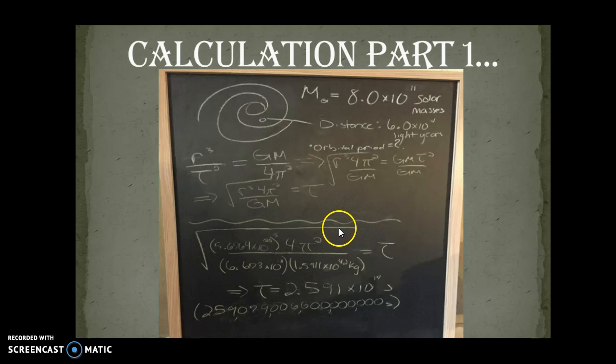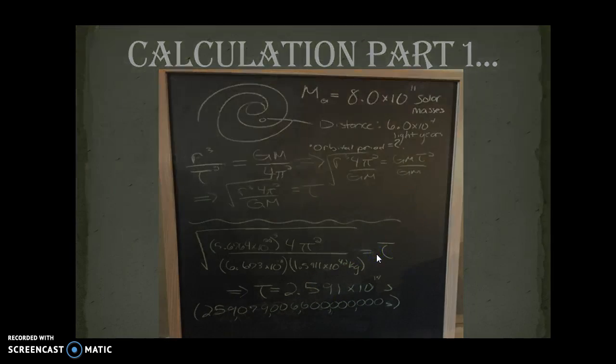Because in order to use this equation, you have to convert everything or it just won't work. I thought at first that I didn't convert and I was scared, because I'd have to do everything again. So it's 1.5911 times 10 to the 40th kilograms. I use this roundabout way of finding orbital period by solving for it. Square root of r cubed times 4 pi squared over universal gravitation constant times mass. So I got t equals 2.591 times 10 to the 17th seconds. I'm pretty sure that's a 17. Here's the real number. I'm not going to say that loud because that's a lot.